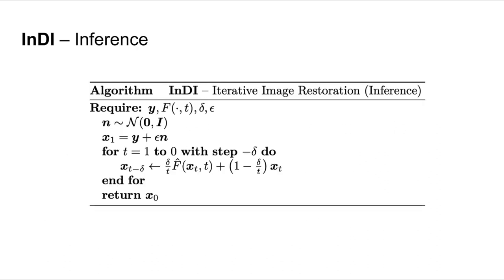Once we train the model, doing inference is straightforward. We start by adding some noise to the input and then just iterate the update rule till we reach time zero.